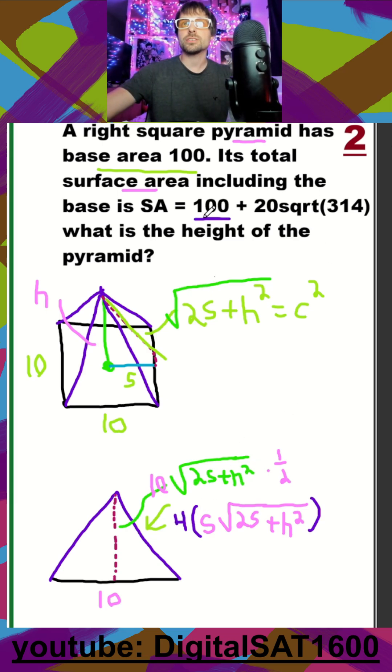This is going to be the surface area of our base, which is just the square. This is going to be the surface area of our four triangles. So you should get a nice value here. You get the 20 that they have on the outside. And then again, just 25 plus h squared under the square root. So this one should turn out to be pretty clean.